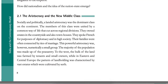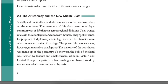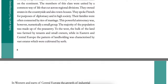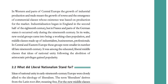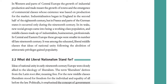The majority of the population was made up of peasantry. To the west, the bulk of the land was farmed by tenants and small owners, while in eastern and central Europe, the pattern of landholding was characterized by vast estates cultivated by serfs. In western and parts of central Europe, the growth of industrial production and trade meant the growth of towns and the emergence of commercial classes. Industrialization began in England in the second half of the 18th century, but in France and parts of the German states it occurred only during the 19th century. New social groups came into being: a working class population and the middle classes made up of industrialists, businessmen and professionals. It was among the educated liberal middle classes that ideas of national unity gained popularity.